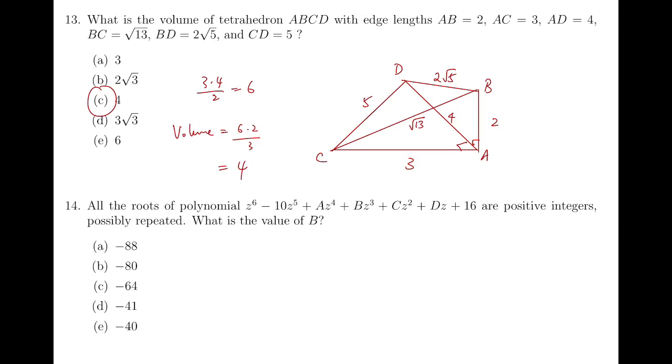Question 14, the sum of roots is 10, while the product of roots is 16. So by trial and error, we can find that 2 of the roots are 1, and 4 of the roots are 2. So this polynomial can be factorized as Z minus 1 whole squared times Z minus 2 to the power 4.